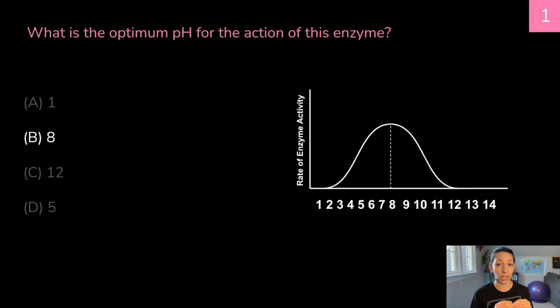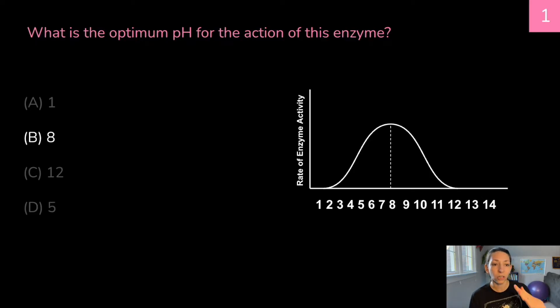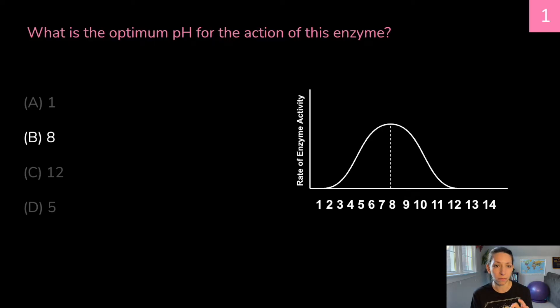If the pH is too low or too high, this enzyme will probably denature and will not function. At pH 5, we see an increase in enzyme activity, but it is not quite the optimum yet. The optimum is that highest point on the graph.